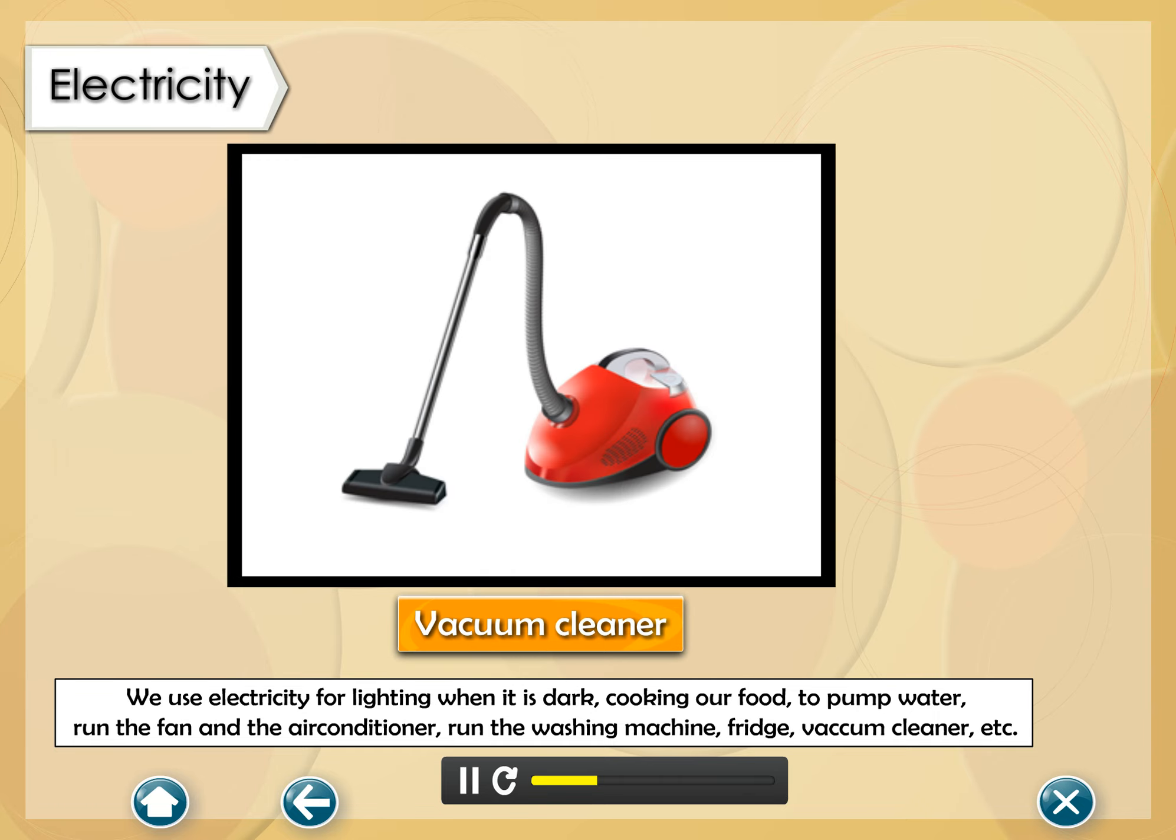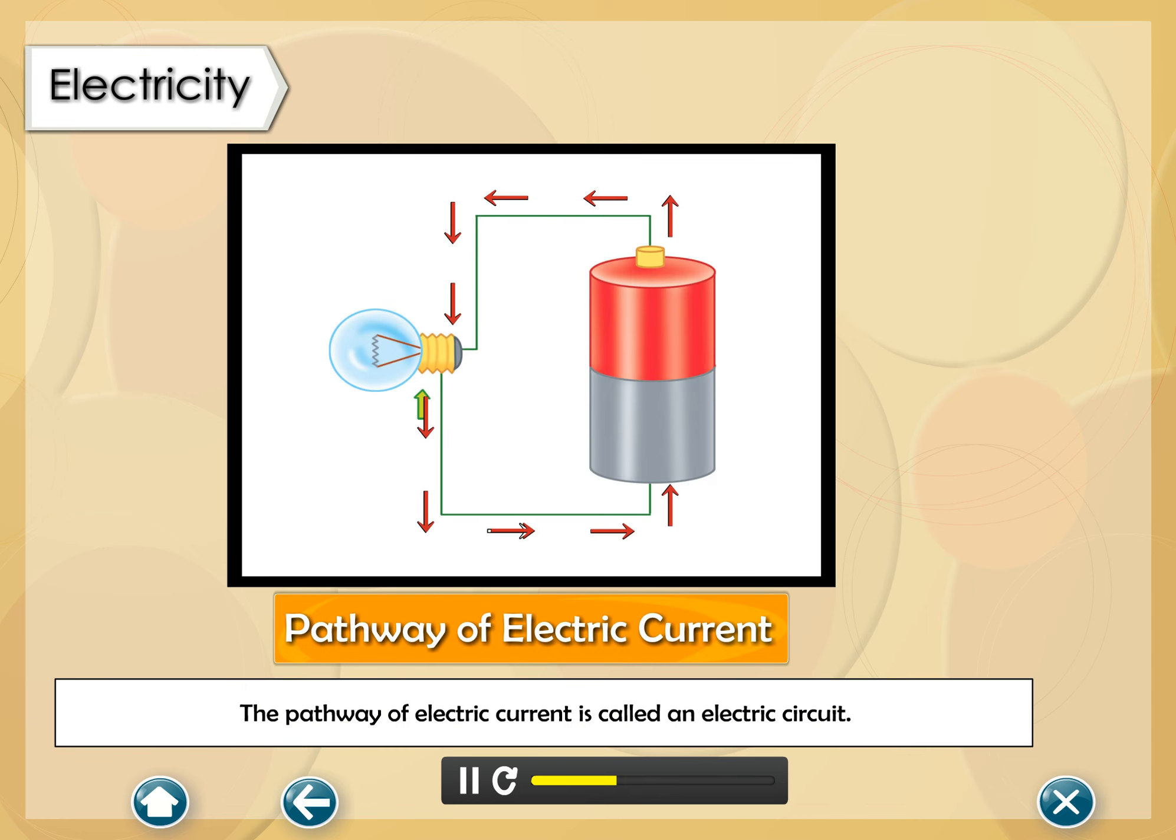The movement of electrons makes electric current flow. The pathway of electric current is called an electric circuit.